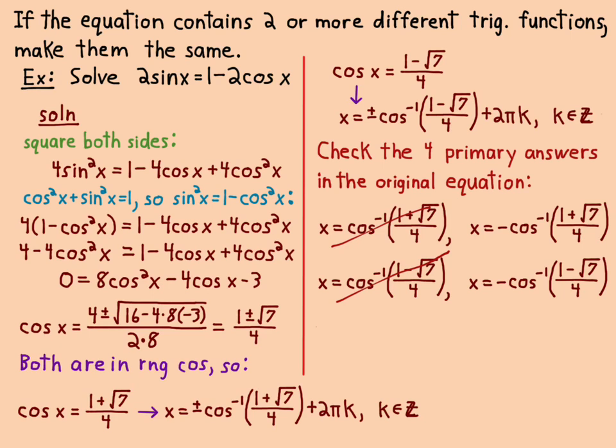Only the negative cosines worked. The two on the right side, x = -cos⁻¹((1 + √7)/4) and x = -cos⁻¹((1 - √7)/4), those are the two that worked. So you have to check these.